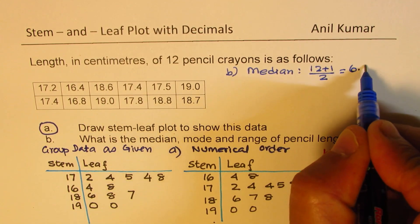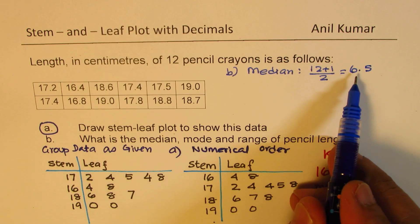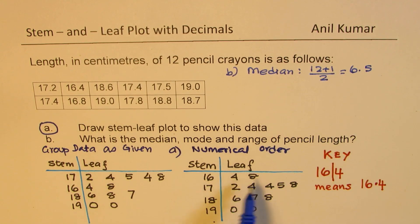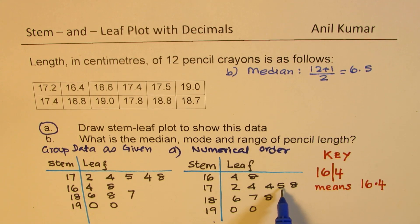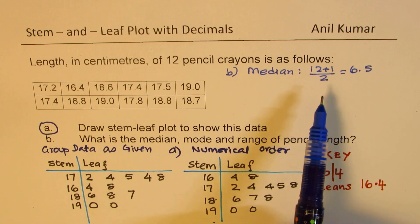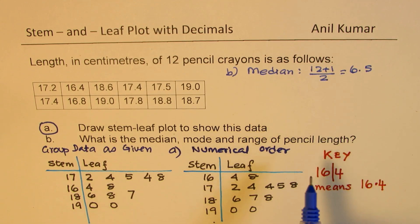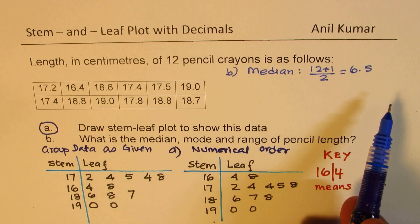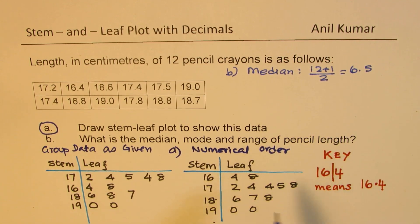So we get 6.5. So 6.5 is the position. So in this particular: 1, 2, 3, 4, 5, 6 and 0.5 means what comes in between 6 and 7. So it is actually the element between 6 and 7.